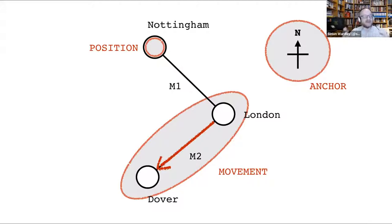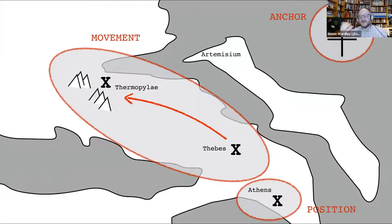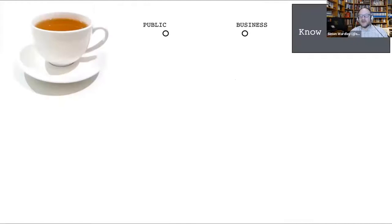To be a map, you need basic characteristics: first, an anchor — like magnetic north in geography; second, position of pieces relative to the anchor — Nottingham is north of London; third, consistency of movement — north is north, south is south. Almost everything called a 'map' in business is not a map, it's a graph. The same principles apply to mapping a competitive landscape: anchor, position, and movement.